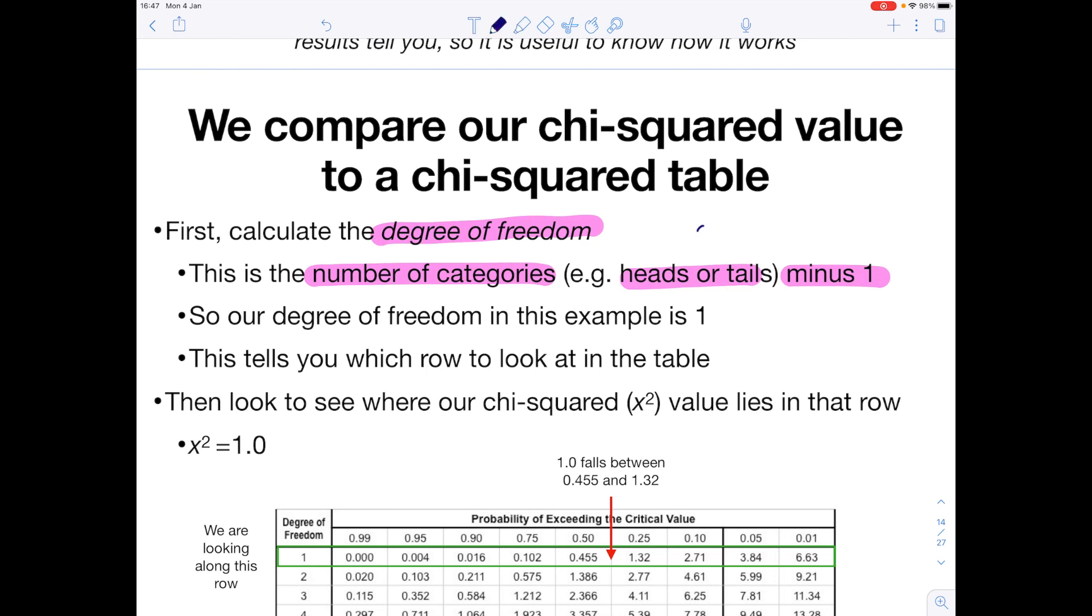So because we have two categories, either heads or tails, we minus 1, therefore our degree of freedom is 1. And the importance of the degrees of freedom is it tells you which row to look at in the table.